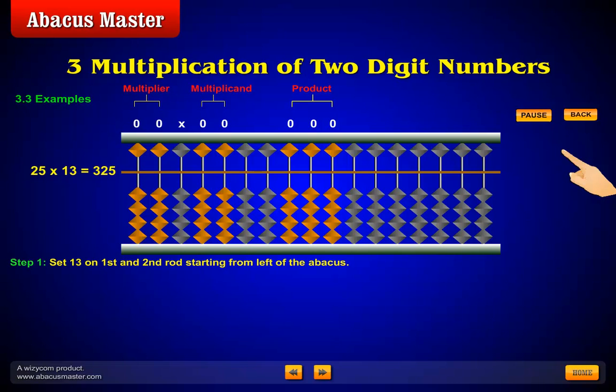Step 1. Set 13 on first and second rod, starting from left of the abacus.